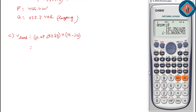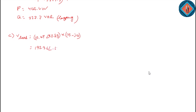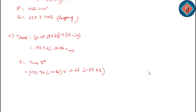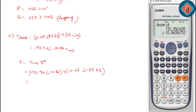192.36 at minus 10.86 degrees is the RMS voltage of the load — E RMS. Complex power equals E RMS times I conjugate: 192.36 at an angle minus 10.86, multiplied by 10.67 at an angle minus 22.83.